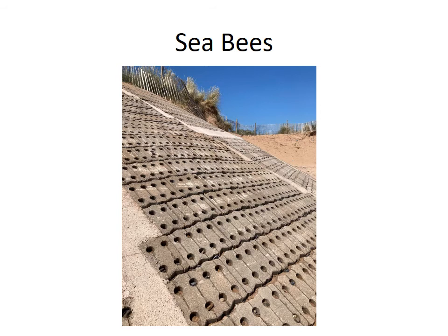This is a really interesting one I hadn't seen before — these are sea bees. They're a light revetment built at the same kind of angle, but instead of being solid they have holes in the concrete blocks. The holes allow water to go through and soak into the sand behind, so rather than retracting back into the sea, the water gets absorbed into the land behind and actually helps feed the dunes.